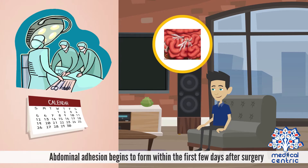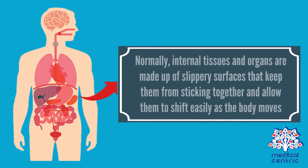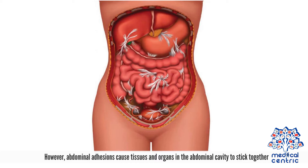Abdominal adhesion begins to form within the first few days after surgery, but symptoms may not appear until after months or even years. Normally, internal tissues and organs are made up of slippery surfaces that keep them from sticking together and allow them to shift easily as the body moves. However, abdominal adhesions cause tissues and organs in the abdominal cavity to stick together.